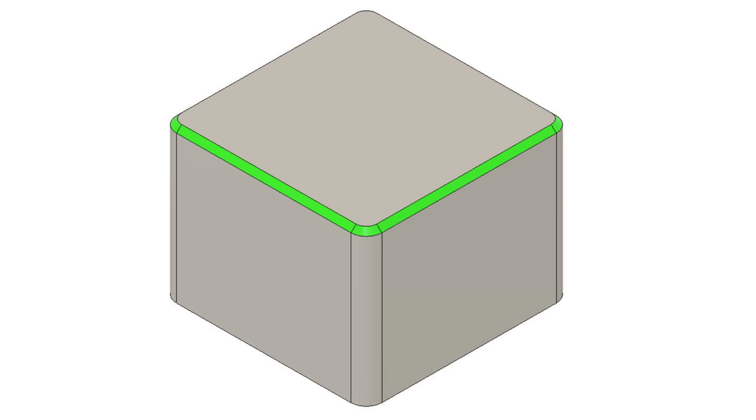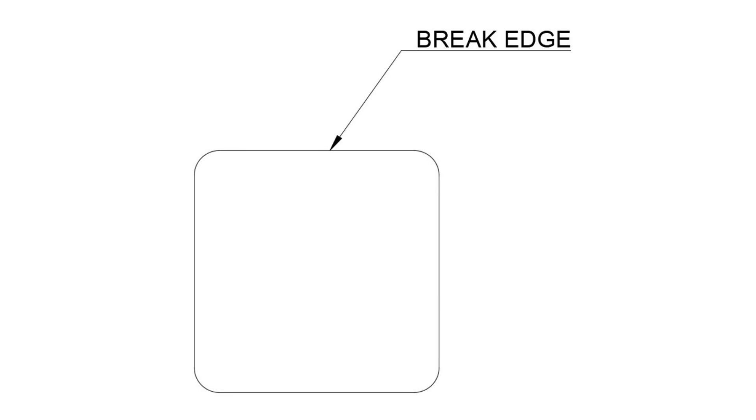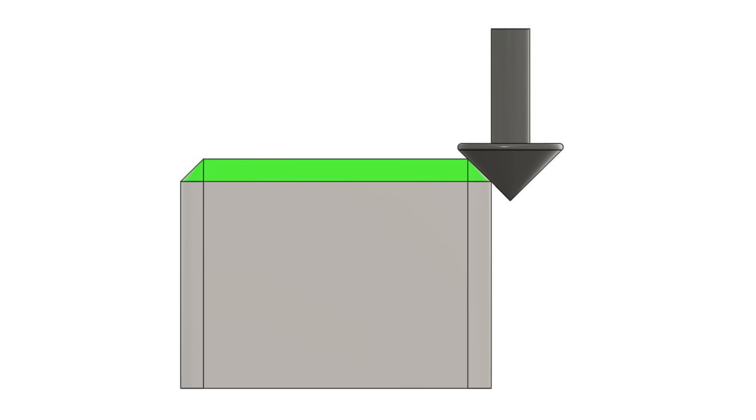If you want the sharp edge broken on a part, simply point to it on the drawing and label it as break edge. The machinist will deburr this edge. Only model a chamfer if you actually need a specific dimension. Keep the angle of the chamfer as 45 degrees as this is a very common tool size. Different widths of chamfer can be made with the same tool simply by positioning it in a different location.